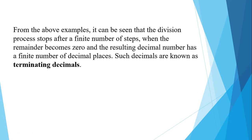From the above examples, it can be seen that the division process terminates after a finite number of steps when the remainder becomes zero. The resulting decimal number has a finite number of decimal places. Such decimals are known as terminating decimals.